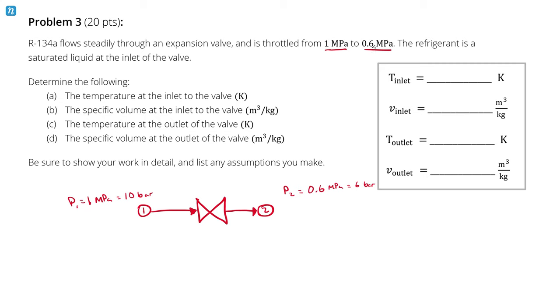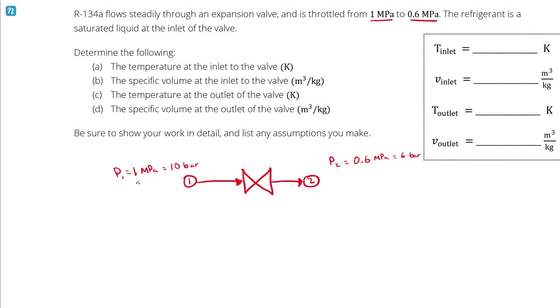But if I had said the pressure changes from 1 MPa to 600 kPa, it would have been harder to recognize what's happening, especially if you didn't understand the units. You'll see that commonly - people use different units to disguise differences between values. What else do I know? The refrigerant is a saturated liquid at the inlet, so the quality at state 1 is 0. That's my other piece of given information.